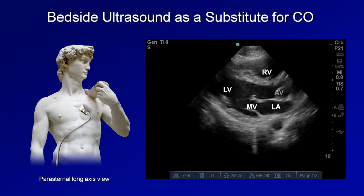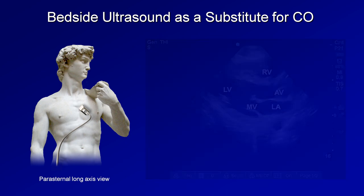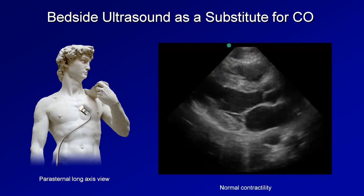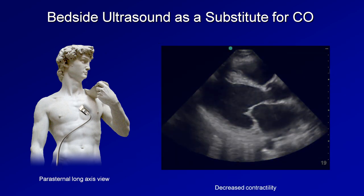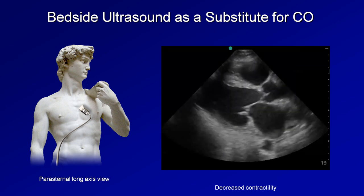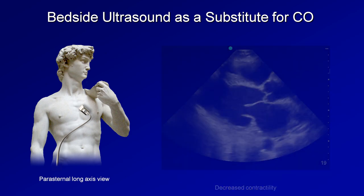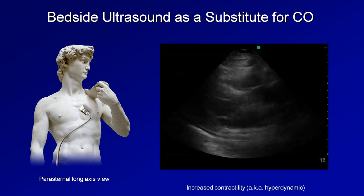When looking for normal LV contractility, the apparent size of the chamber should change significantly between systole and diastole, the septum should visibly thicken with each contraction, and the anterior leaflet of the mitral valve should move substantially — nearly touching the septum during diastole. Here is what normal LV function looks like, here is a patient with decreased LV function suggesting cardiogenic shock, and here is one with hyperdynamic LV function suggesting septic or hypovolemic shock.